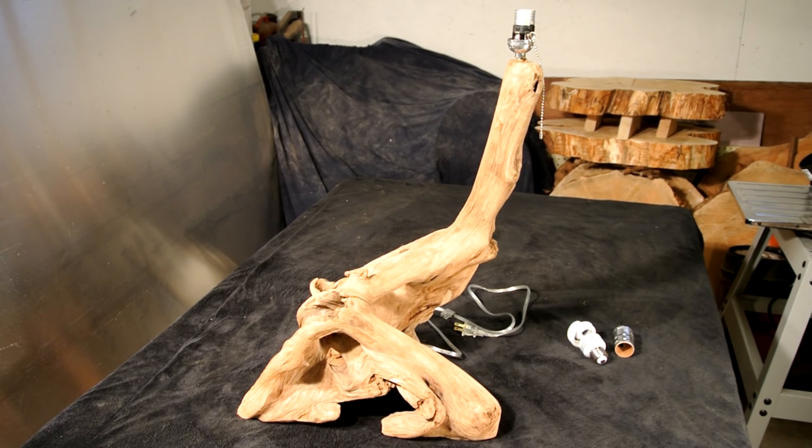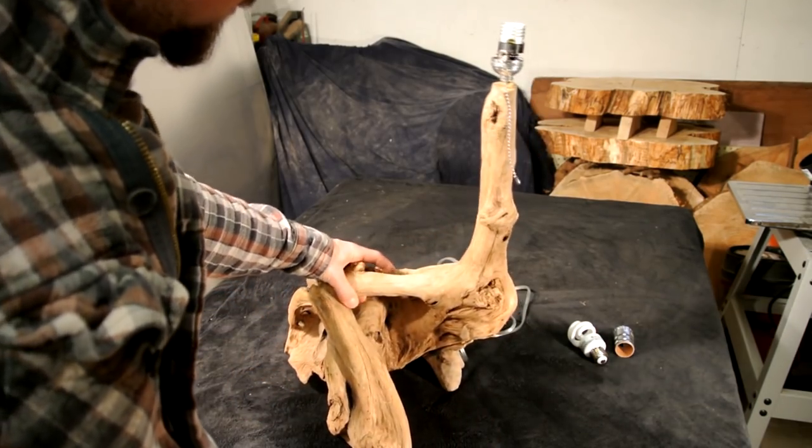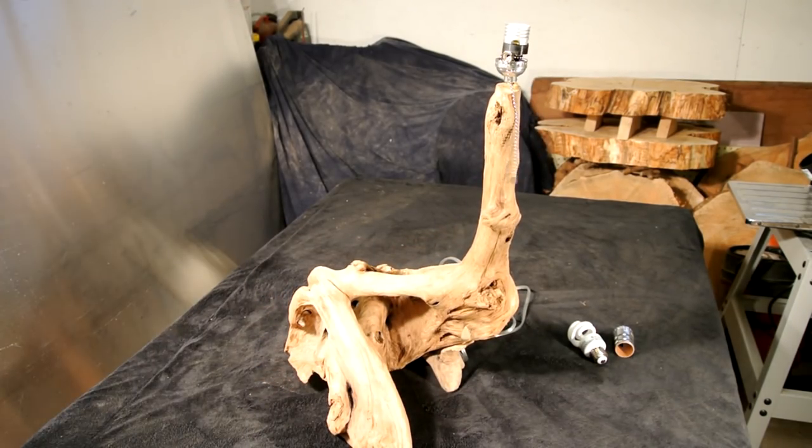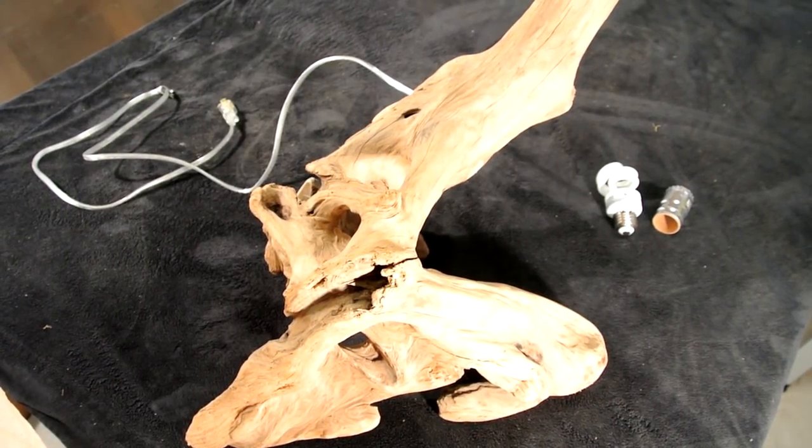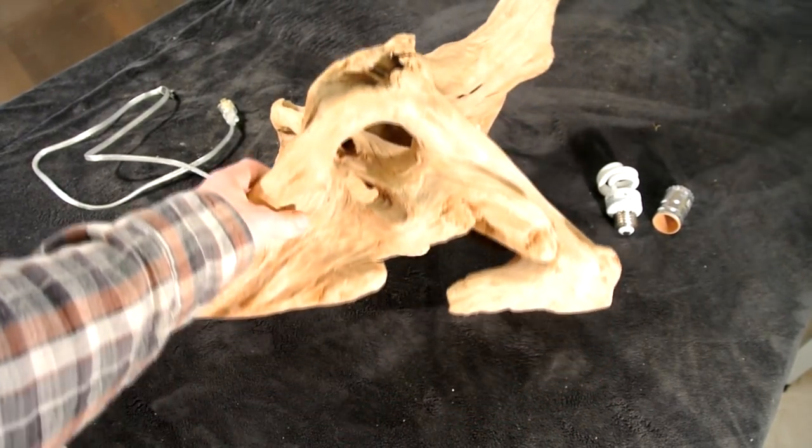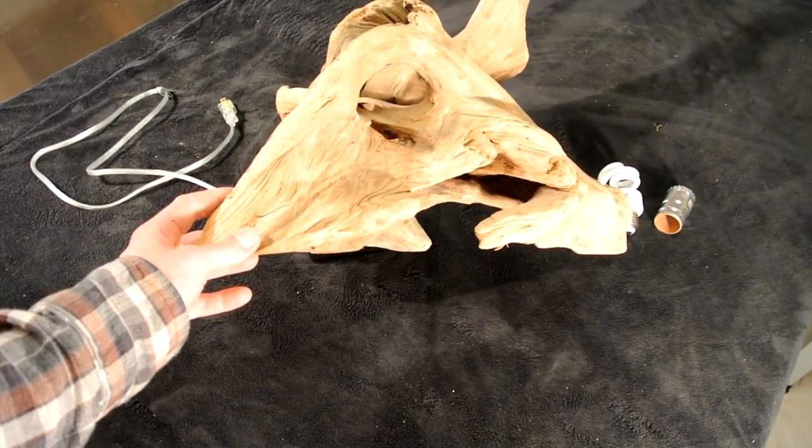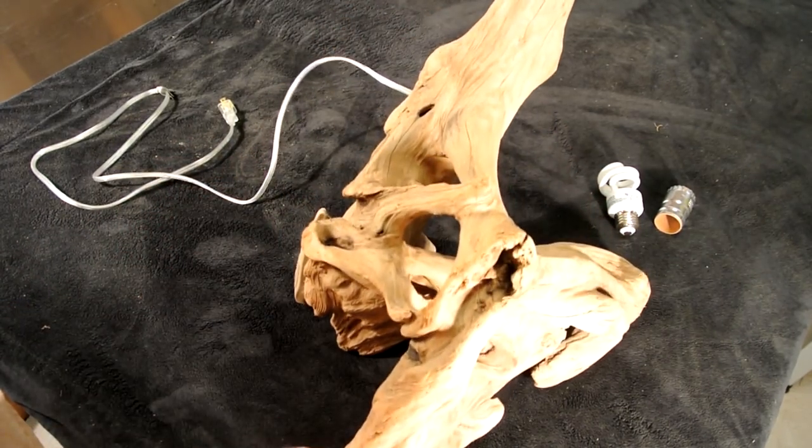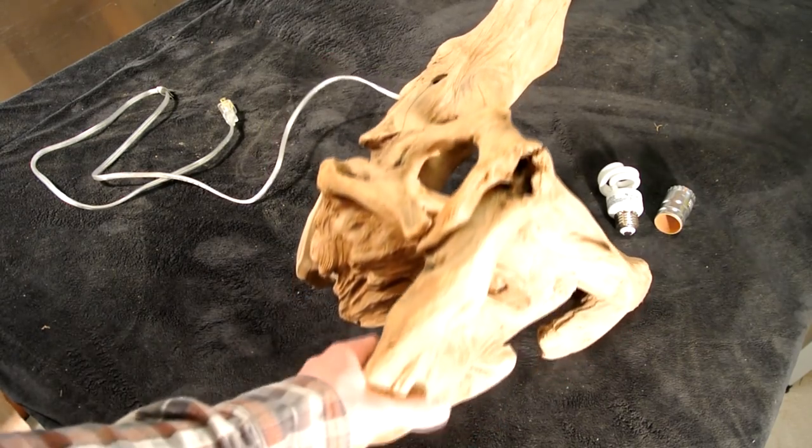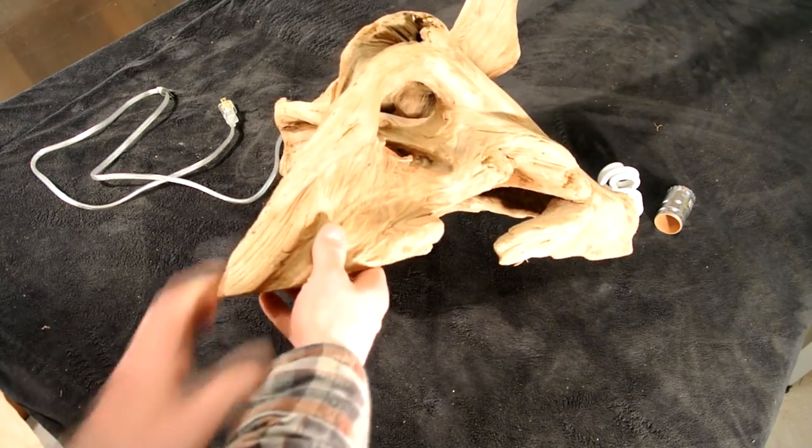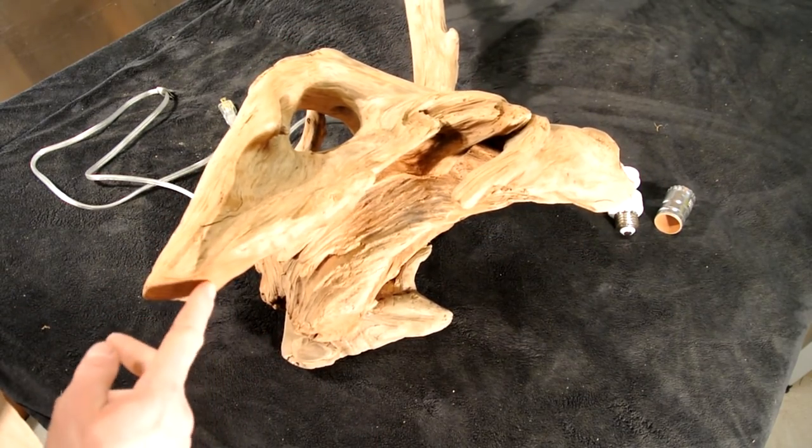I started with 120 grit and then I went all the way up to 220 grit. I didn't go any higher because I wanted to keep that rough rustic look. Now it's time to level the lamp out so it'll sit flat on a tabletop. Depending on what you have for driftwood, you might not need to do this. If you have just a normal round, you might just need to cut it on the chop saw or cut it flat and you'll be done.